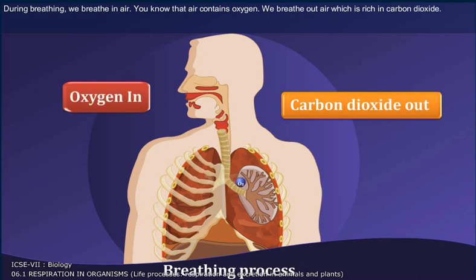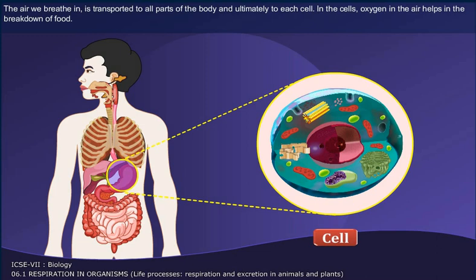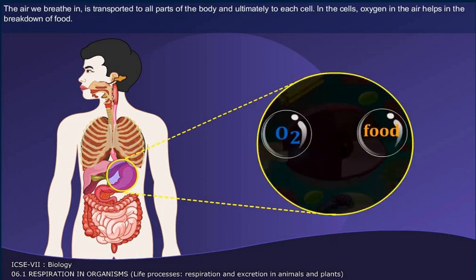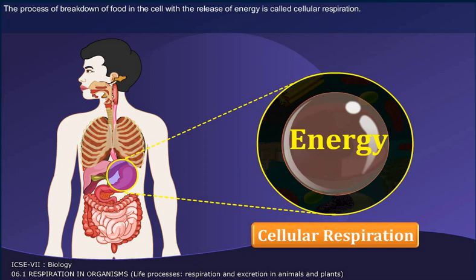During breathing, we breathe in air. You know that air contains oxygen. We breathe out air, which is rich in carbon dioxide. The air we breathe in is transported to all parts of the body and ultimately to each cell. In the cells, oxygen in the air helps in the breakdown of food. The process of breakdown of food in the cell with the release of energy is called cellular respiration.